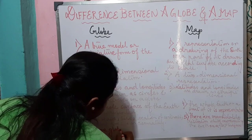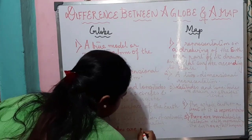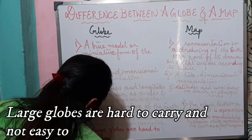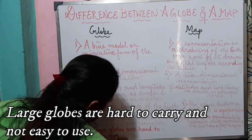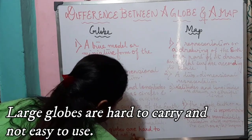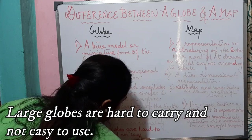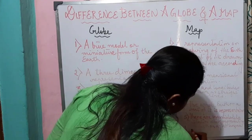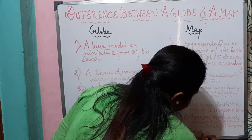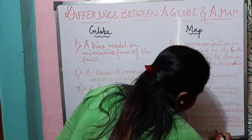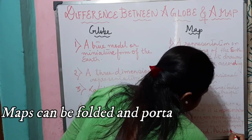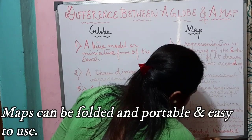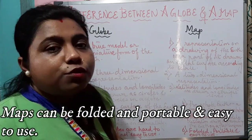In terms of portability and use, globes are large in size, so large globes are hard to carry and not easy to use. Maps, on the other hand, can be folded, so they are portable and easy to use.